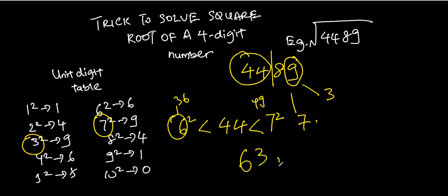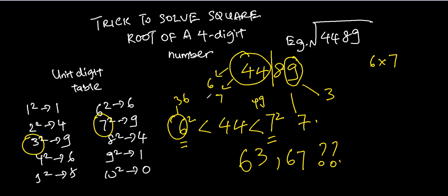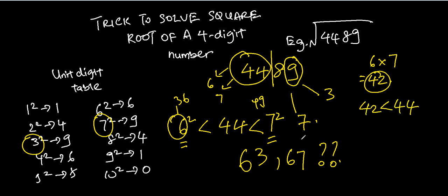But is it 63 or 67? In order to find out, the last step is to multiply 6 and 7 together. Because 44 is in between 6 squared and 7 squared, we take 6 and 7 and multiply them together, which gives 42. We then check whether 42 is greater or smaller than 44. Since 42 is smaller than 44, we take the bigger of the two options. So the answer is 67. If the product had been greater than 44, we would have taken 63.